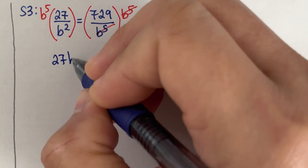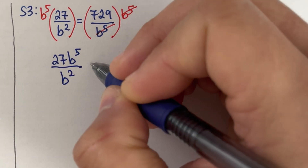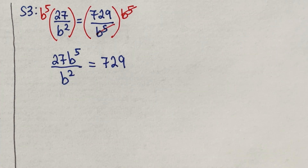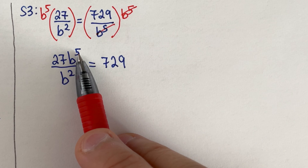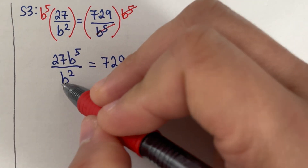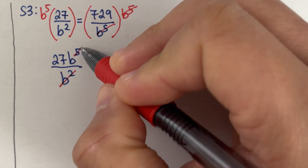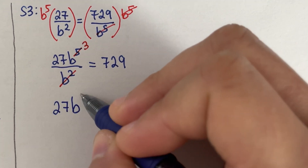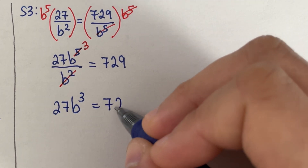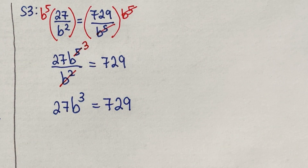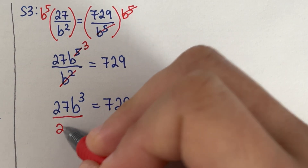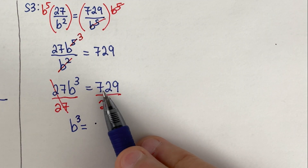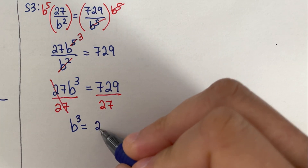After multiplying, we get 27·b^5 over b² equals 729. Since there are five b's on top and two at the bottom, we cancel two, leaving 27·b³ equals 729. Dividing both sides by 27 gives b³ equals 27.